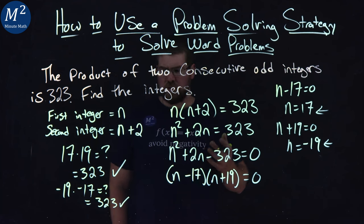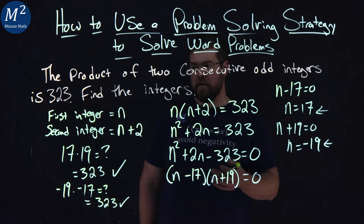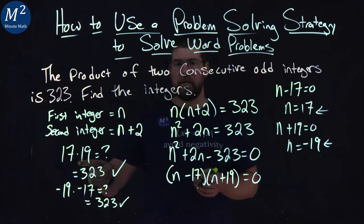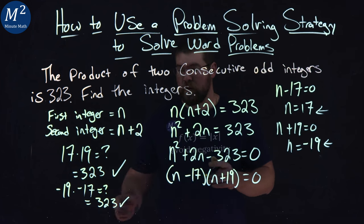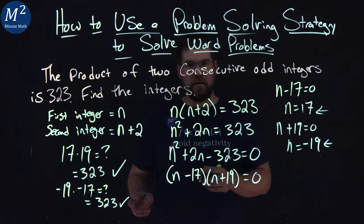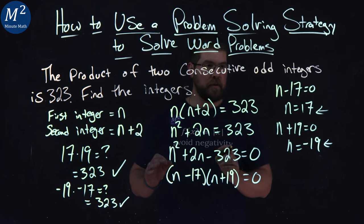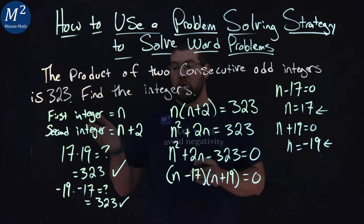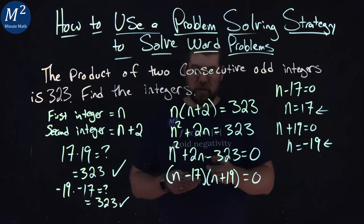So we have two solutions here, two consecutive odd integers. The first one, 17 and 19. The next one also works as negative 19 and negative 17. Both of them are consecutive odd integer pairs, and they multiply together to be 323.